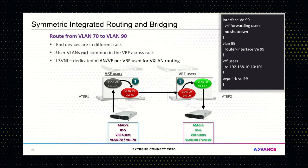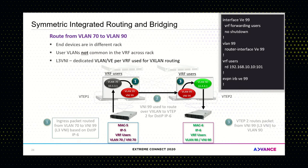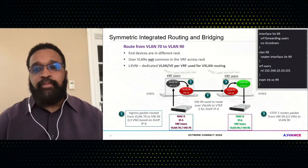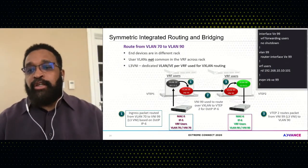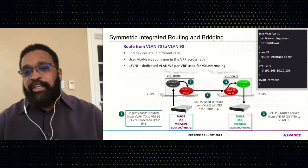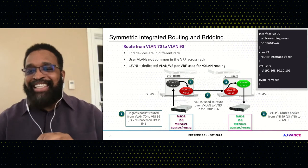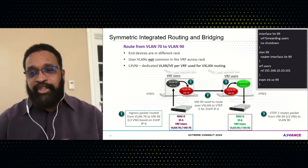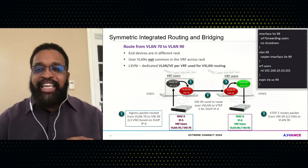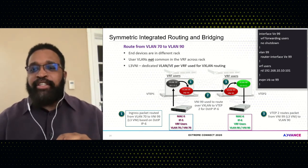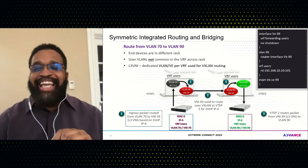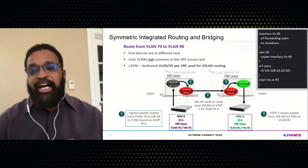Looking at the CLI configuration for symmetric IRB, the integrated routing and bridging VE 99 is configured under the VRF context. This means for every VE instance within a VRF, you must have a dedicated L3 VNI defined.